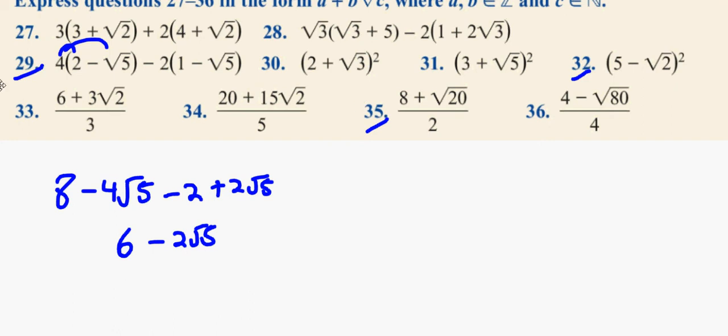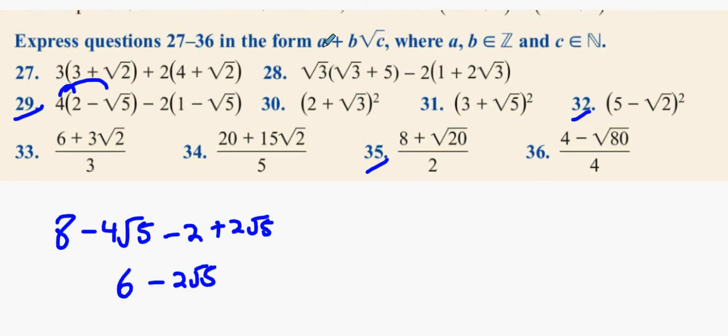Now, it says in the form, it says in the form A plus B root C. Well, A would be 6. B would be minus 2. C would be 5, wouldn't it? Because it's 6 minus 2 root 5. Does anybody get that? This part here just means that you're going to have a regular number plus a surd in your answer. All the answers should have a regular number followed by a surd. That's all that means.